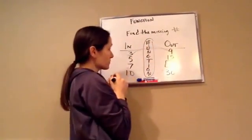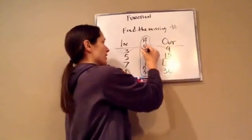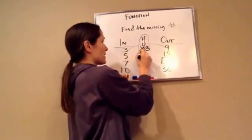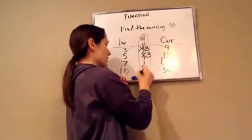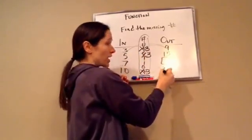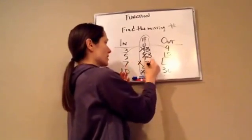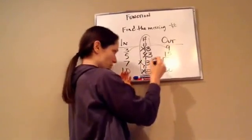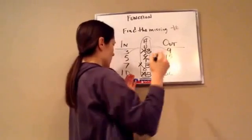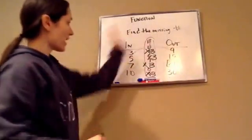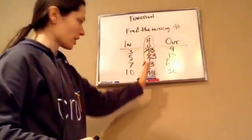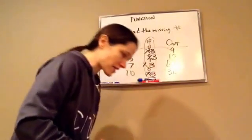So I think it's times 3. Okay, well let's try it. Times 3 is the function. 3 times 3 is 9, good. 5 times 3 is 15, good. 10 times 3 is 30. So what would 7 times 3 be? 21. Right? So that's how you would figure out the function, just so you know. And then they're going to ask you to do things like that, and you just have to discover the function. Okay, that's lesson 58.